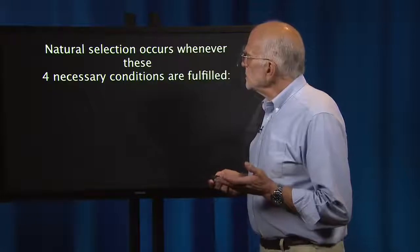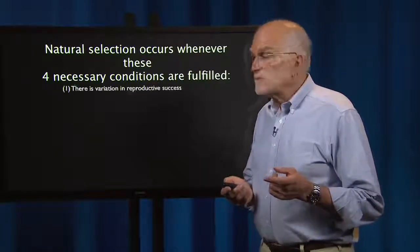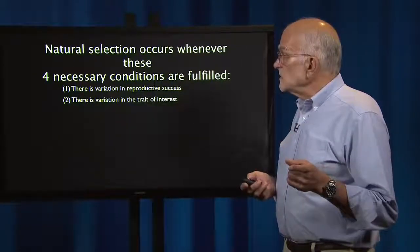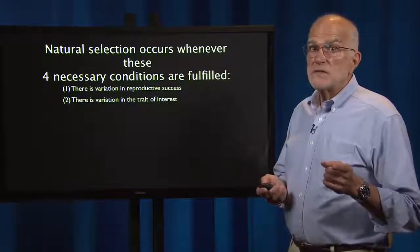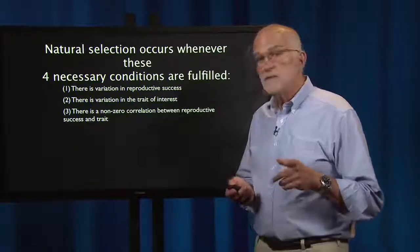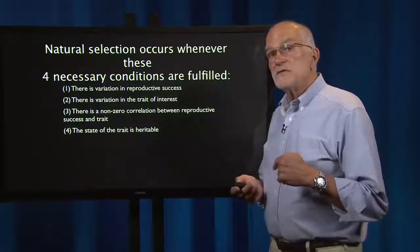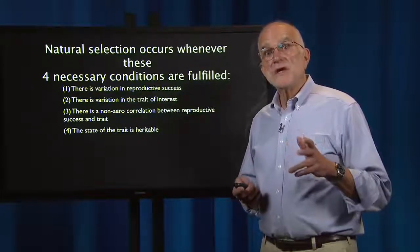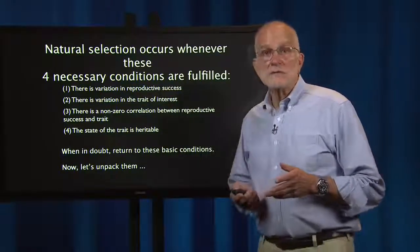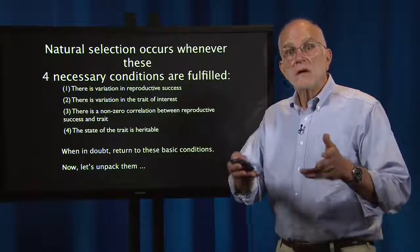Natural selection occurs whenever these four necessary conditions are fulfilled. First, there's variation in reproductive success. Second, there's variation in the trait of interest. Third, there's a non-zero correlation between reproductive success and the trait. And fourth, the state of the trait is heritable — there's genetic variation for the trait. When in doubt, return to these basic conditions. They help you understand whether or not natural selection could be operating on anything.